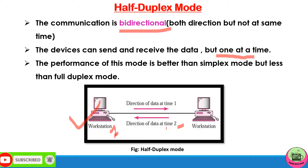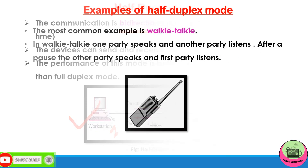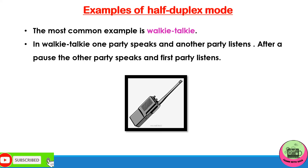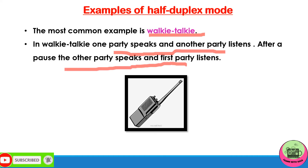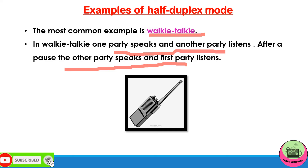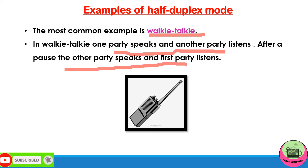The most common example of half-duplex is walkie-talkie. In walkie-talkie, one party speaks and another party listens, but after a pause the other party speaks and the first party listens. Both do not speak simultaneously — if you do that in half-duplex mode, the communication will be distorted. Only one party speaks while the other listens, and after a pause the other party speaks and the first one receives.